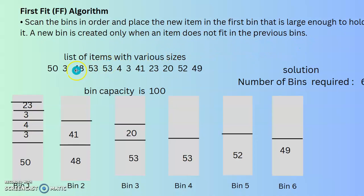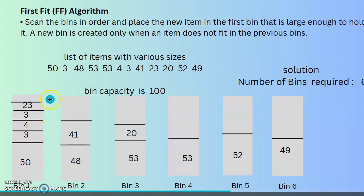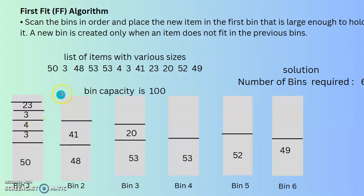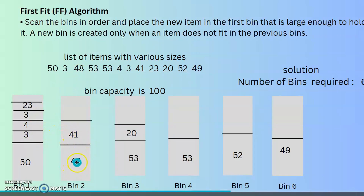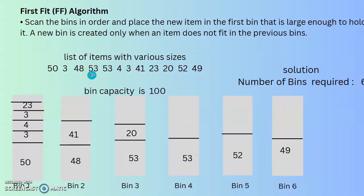According to this algorithm, take the first item 50 and put it in bin 1. Item 3 can be placed in the first bin as well. For item 48, it cannot fit in the first bin, so we go to bin 2. For 53, we check whether it can be placed in the first or second bin — that is the difference from the previous algorithm. It is not possible, so we go for the third bin. For the next 53, we again check previous bins; it is not possible, so we go for bin 4.